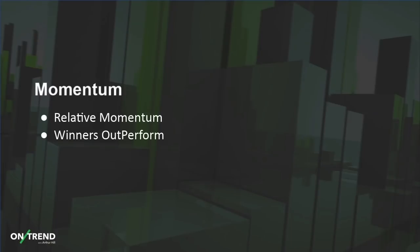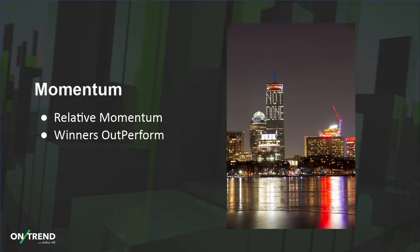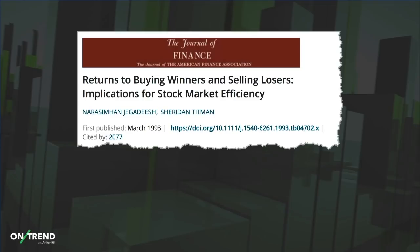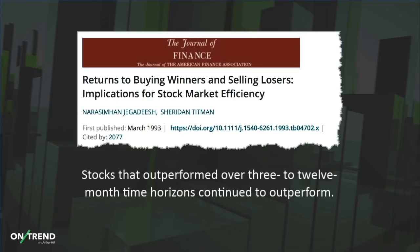When it comes to stocks, there is another factor at work that helps produce winners, and that is momentum — relative momentum. The theory is that winners continue to win or outperform. This picture of the New England Patriots before the 2019 Super Bowl illustrates the point: you wouldn't bet against the Patriots because they win, and winners have a better chance of continuing to win. There are numerous academic papers on momentum in the stock market, including one from Jegadeesh and Titman showing that stocks that outperformed over 3 to 12-month horizons continue to outperform.